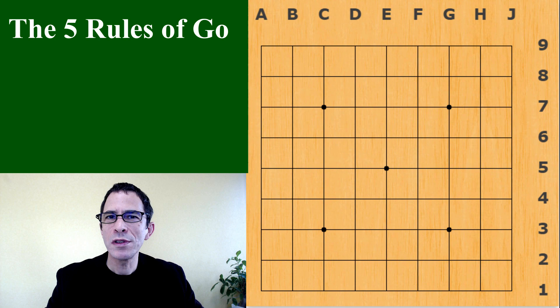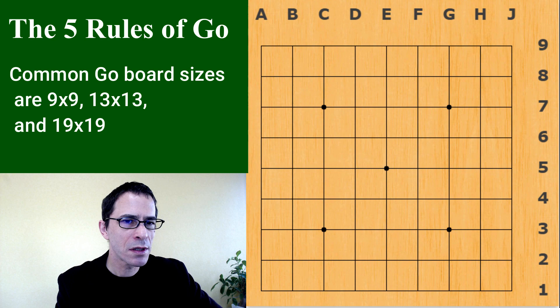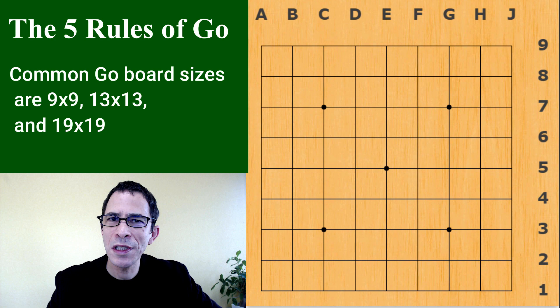We're going to start with this image of a Go board. A Go board is a grid of lines. It can be on a computer screen like this one or on a piece of paper. Traditional boards are usually wooden and have this rectangular grid.